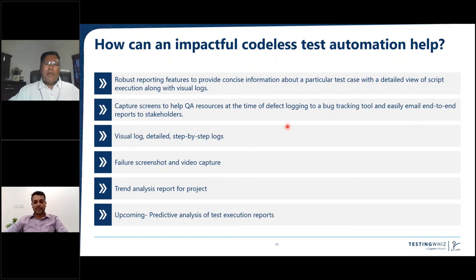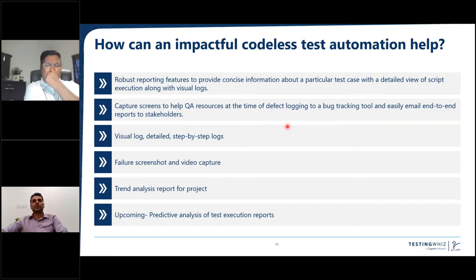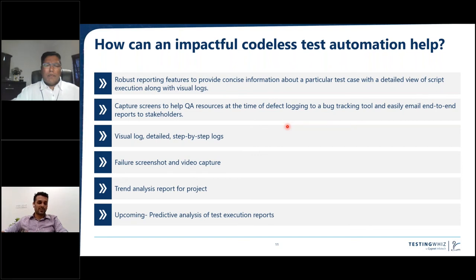The report feature should be available in every automation tool. Visual logs should show where the test case has failed, step-by-step logs should be available for reference, integrations with bug tracking tools should successfully push bugs, and evidence in the form of screenshots or video capture should be able to predict where the test case failed and how to reproduce it. Predictive analysis of where things are getting failed is very straightforward and important.